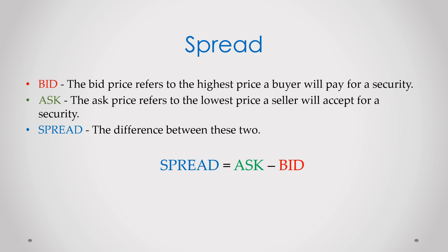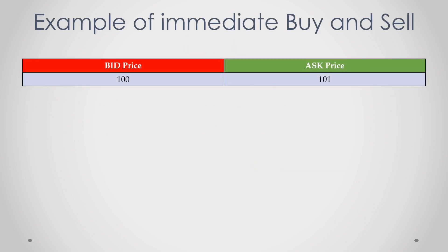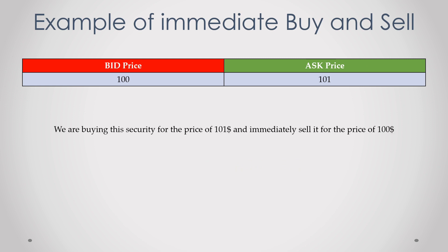Spread is the difference between ask and bid price. And why is spread size important? Simple example: if we have a bid equal to 100 and ask equal to 101, our spread equals $1. And if we buy and immediately sell our security, we will always lose the spread, which is equal to 1 in this example.